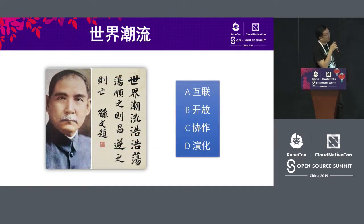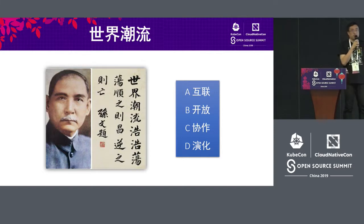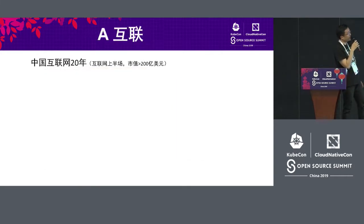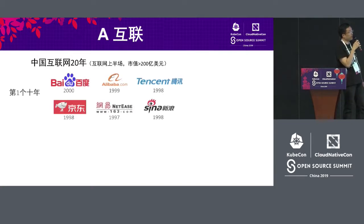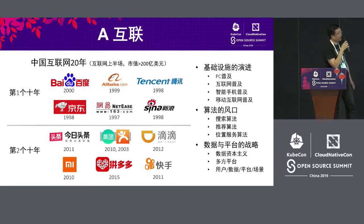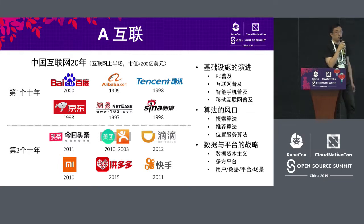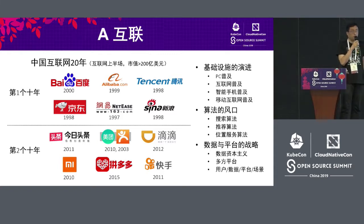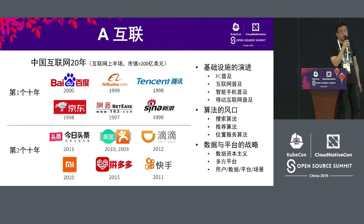In the open source era, I want to briefly talk about the background of open source. Open source is not only a global trend for technical development — it's moving in that direction. We have four key items: connected, open, operation, and evolution. We can experience this a lot in China. Looking back at the last 20 years of China's internet industry, for the first decade we had companies like BAT and JD, and for the second decade we had Didi, Meituan, and others.